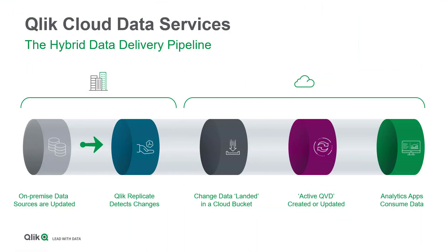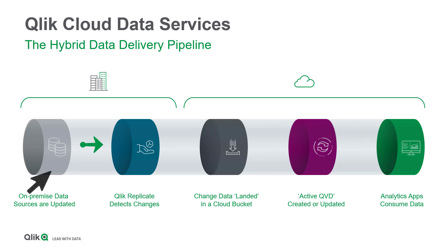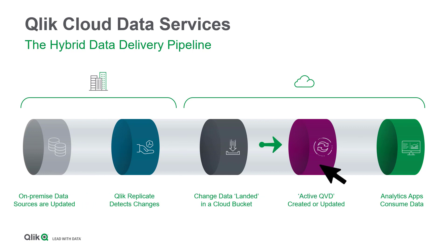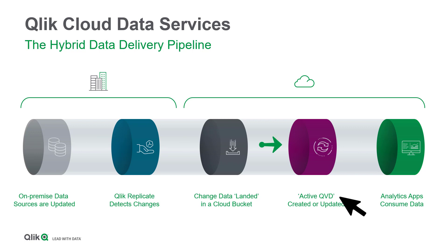Simply stated, this version of the Hybrid Data Delivery Service lets you build a data pipeline to your Qlik Sense SaaS apps. It collects data from disparate sources and continuously delivers analytics-ready data in the form of QVDs. Since these QVDs are automatically updated by the Hybrid Data Delivery Service, we are calling them Active QVDs. These updates happen in near-real time, so your Qlik Sense apps always have the latest information.